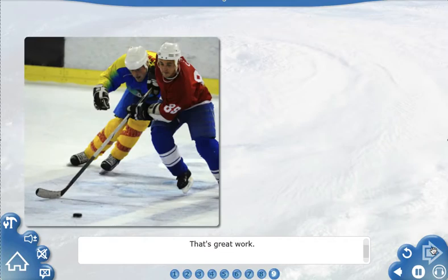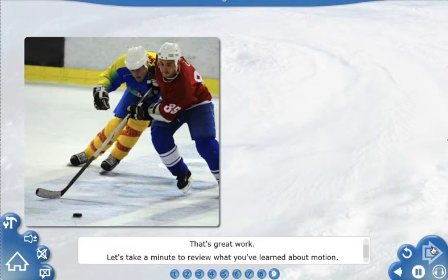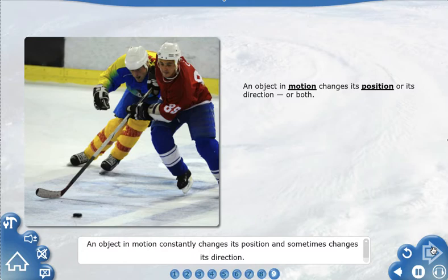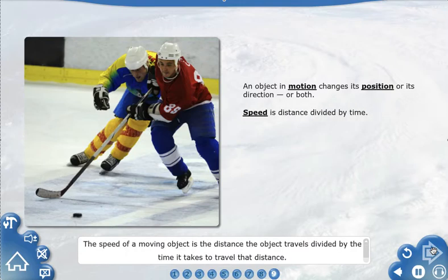That's great work. Let's take a minute to review what you've learned about motion. An object in motion constantly changes its position and sometimes changes its direction. The speed of a moving object is the distance the object travels divided by the time it takes to travel that distance.